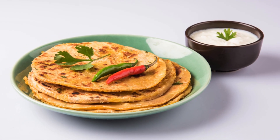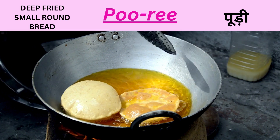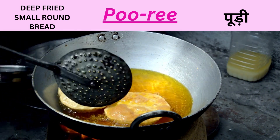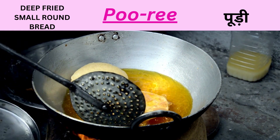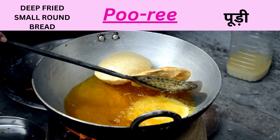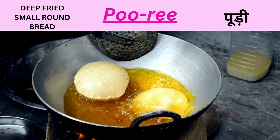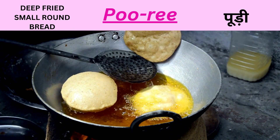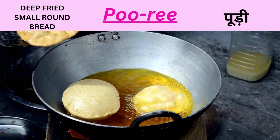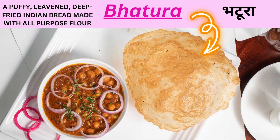Then we have deep fried small round bread made with whole wheat flour. It is known as Puri. A fluffy deep fried Indian bread made with all-purpose flour is known as Bhatura.